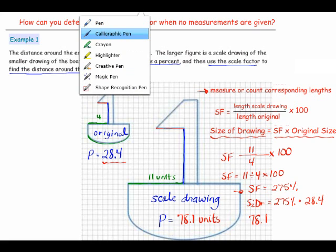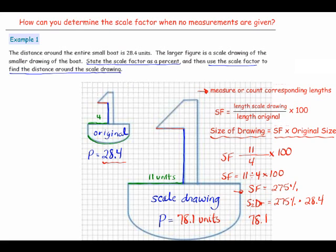In this problem, we were given the perimeter of the figure and asked to find the perimeter of the second figure. Our first step was to measure or count corresponding lengths. Our second step was to calculate the scale factor — take the length in the scale drawing, divide it by the length of the original, and multiply by 100. Once you know the scale factor, multiply it by the original size to get the size of the drawing.